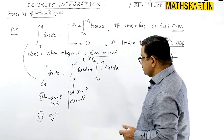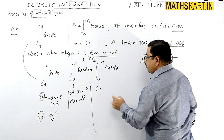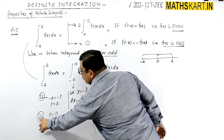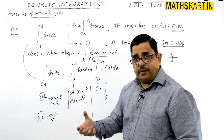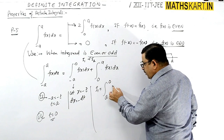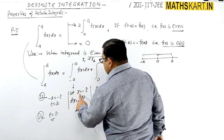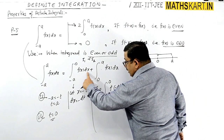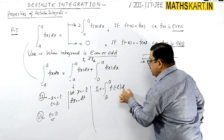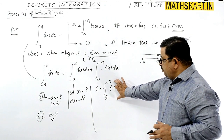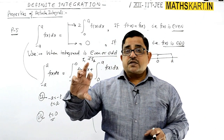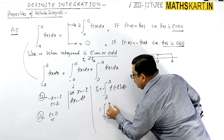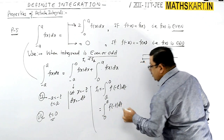We will solve I1 and see what happens. I1 equals the integral from a to 0 of f(minus t) times minus dt. In place of x, we write minus t, and in place of dx, we write minus dt. Now, as per the second property, when you interchange the limits, the minus sign disappears. So using Property 2, this becomes the integral from 0 to a of f(minus t) dt.